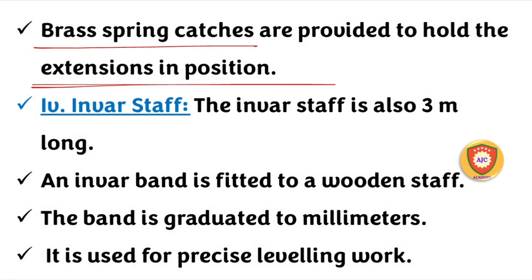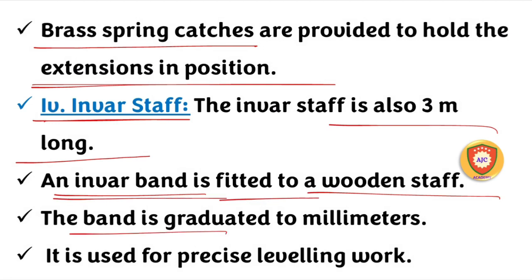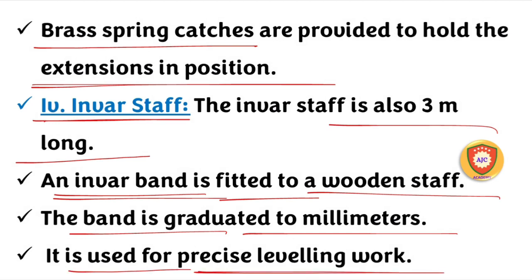The fourth type is the Invar staff, which is 3 meters in length. It consists of a wooden frame with an Invar band fitted to it, and the graduations are marked on the band. This type of Invar staff is used in precise leveling works.